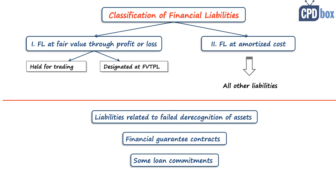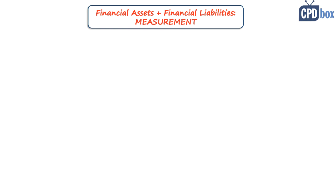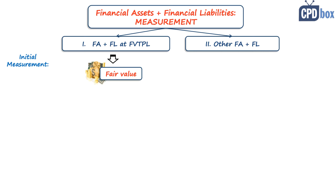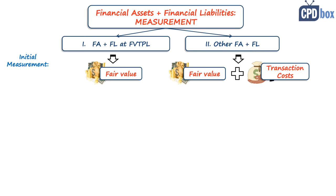We will continue with measurement — and it's important to stress that measurement strongly depends on classification, so you really cannot skip that step. Initially, all financial instruments classified at fair value through profit or loss are measured at the fair value of the consideration given or received. All other assets are initially measured at fair value plus transaction costs. One exception: all trade receivables with no significant financing component — receivables for goods or services basically — are initially measured at the transaction price in line with IFRS 15.